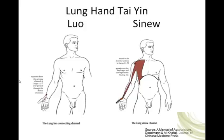It spreads out through the thenar eminence and makes a connection. There's also an exit branch that runs to the tip of the index finger on the radial side of the nail, which is where Large Intestine 1 is.